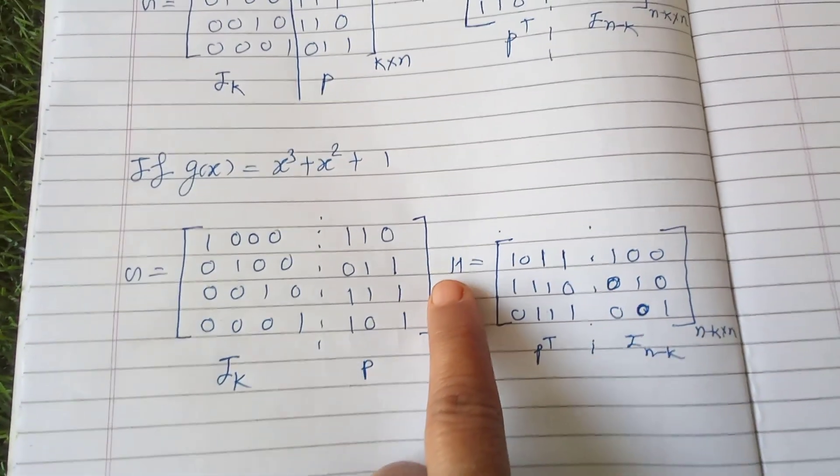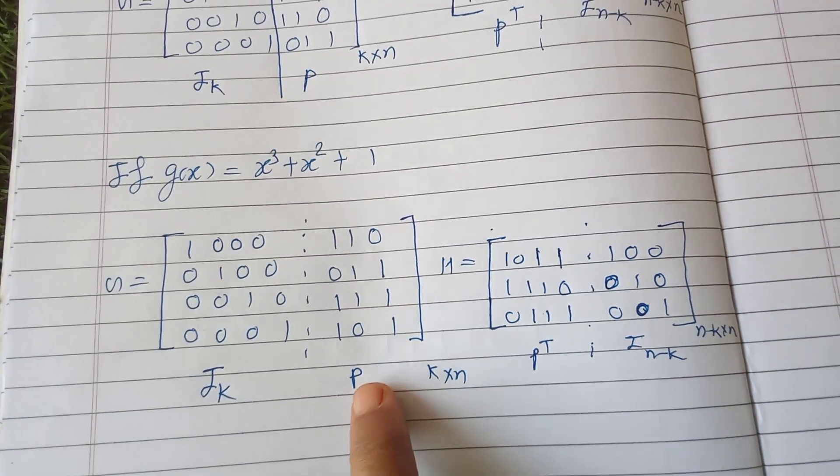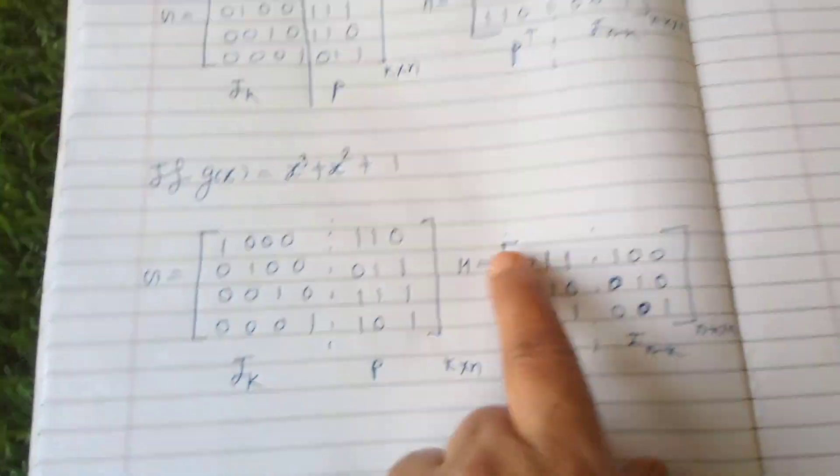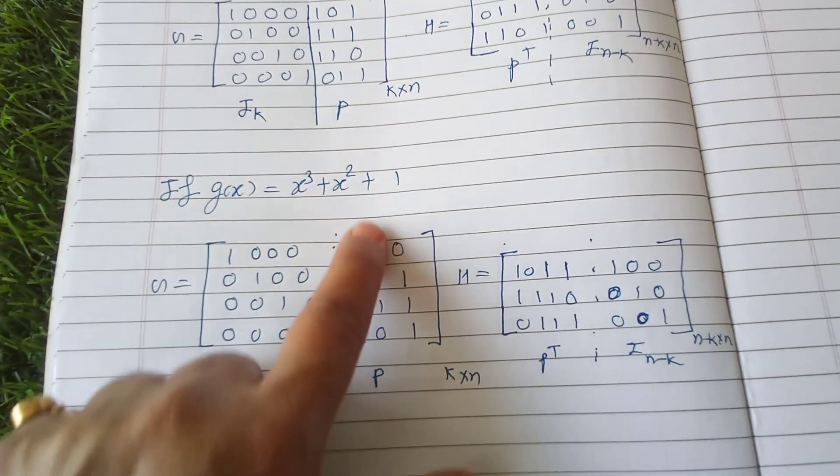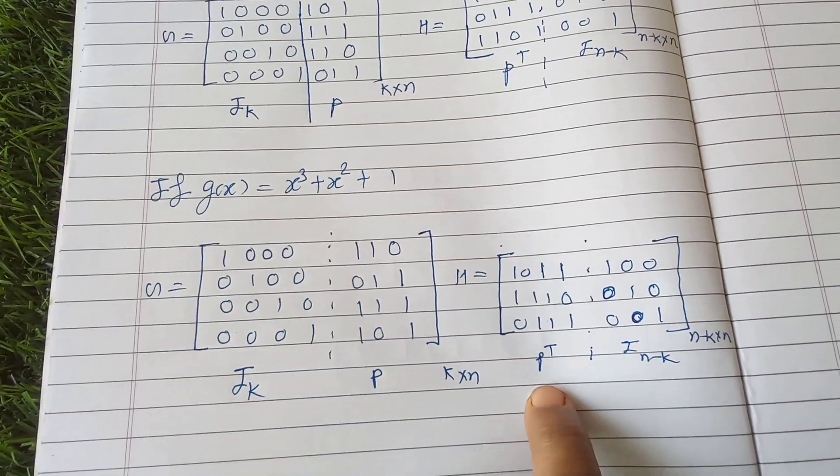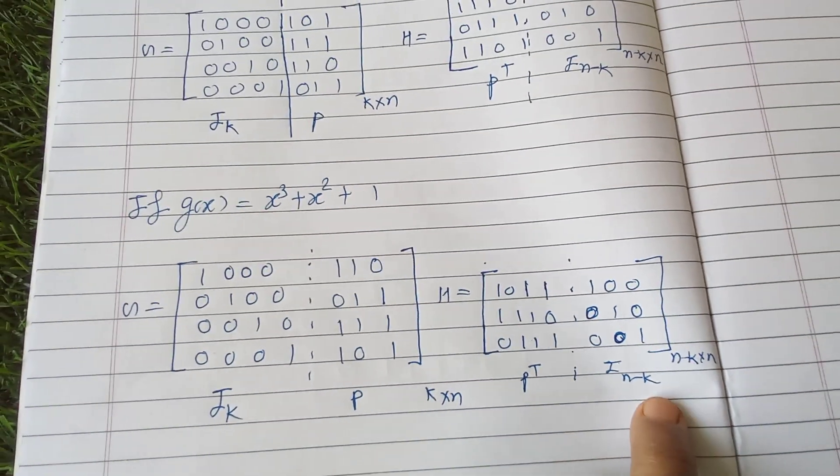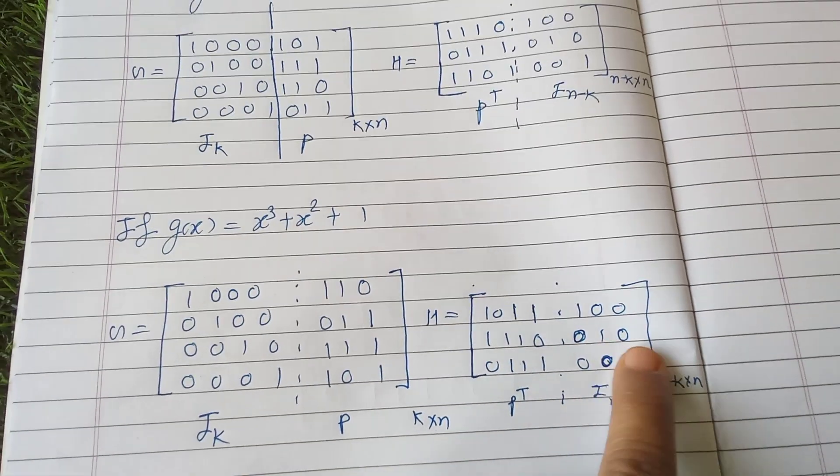To obtain H matrix, H is equal to P^T. So one zero one zero one one triple one zero, then zero triple one P^T. After that identity matrix of n minus k, that is three by three: one zero zero, zero one zero, zero zero one.